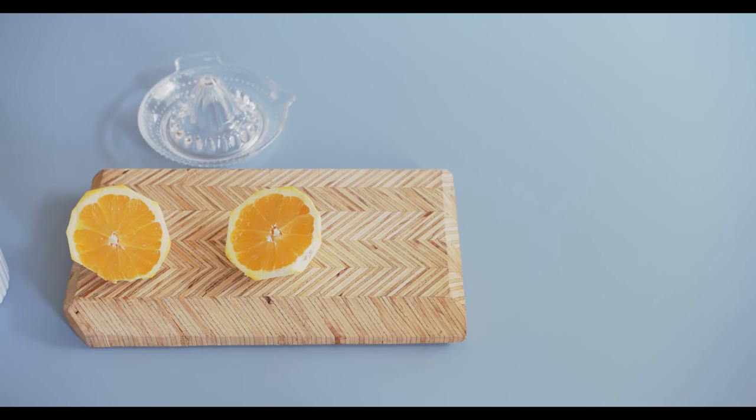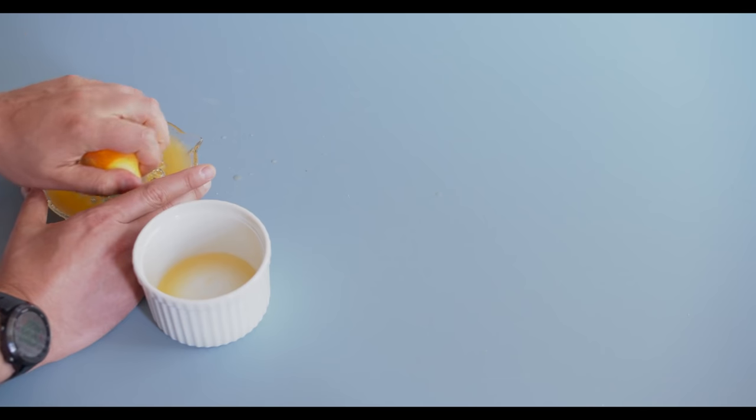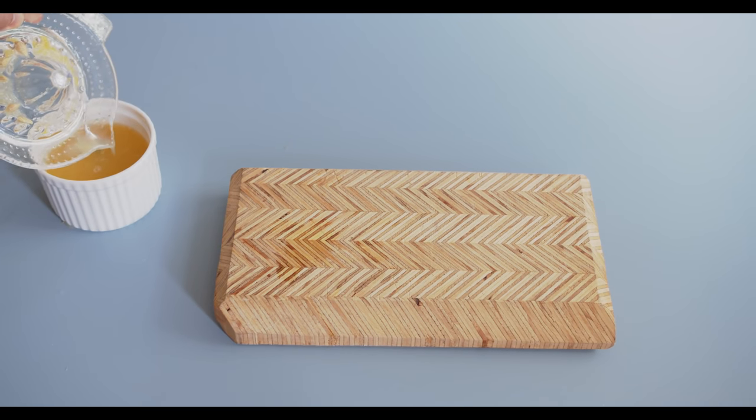Now, while this sits, we can move on to the other part of this, which is just juicing the citrus we've just peeled. Simply just juice the lemons, the limes, and the oranges and collect this delicious juice into a bowl. And we're just going to place this into the fridge while the oleosacrum does its work.